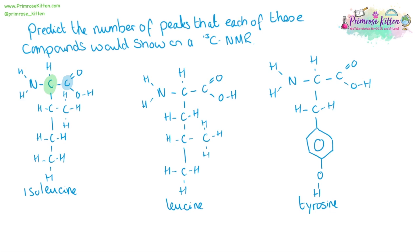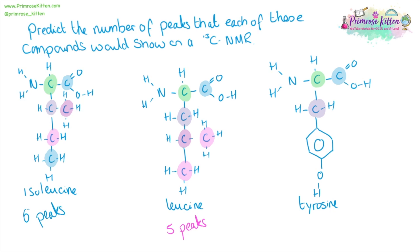Working through isoleucine, we count environments: two, three, four for the methyl group, five, six. For leucine: two, three, four, and then these two methyl groups — you can't tell them apart chemically, so they are in the same chemical environment. For tyrosine: one, two, three, then the first carbon on the benzene ring is four, the opposite carbon is five, and going around the benzene ring either way — because it's symmetrical — each one on each side is going to be in the same carbon environment.